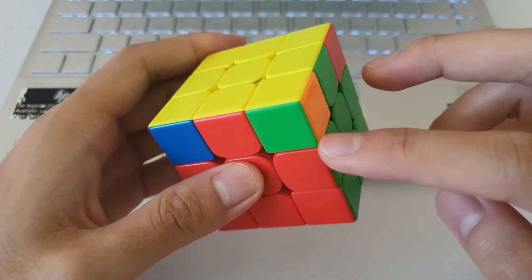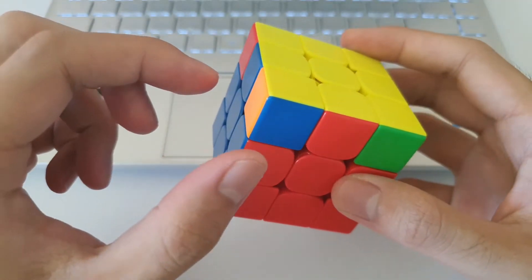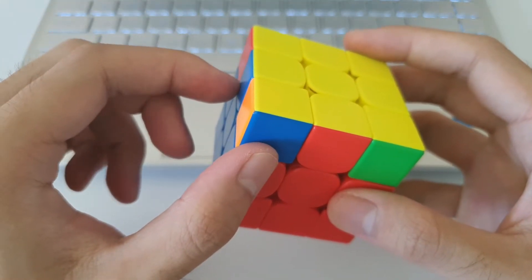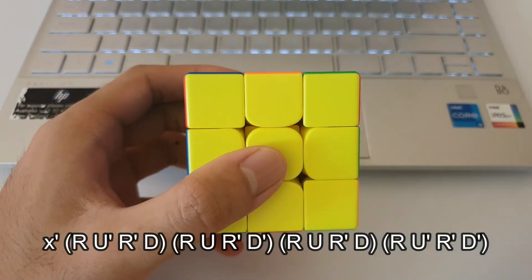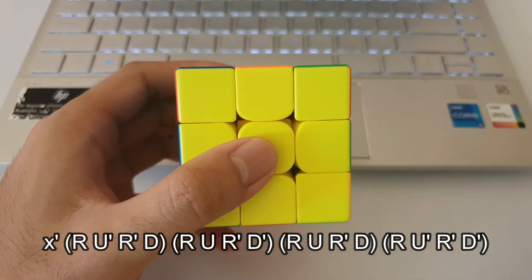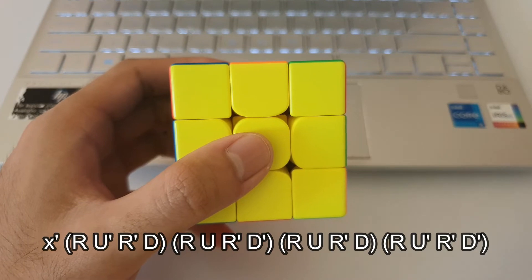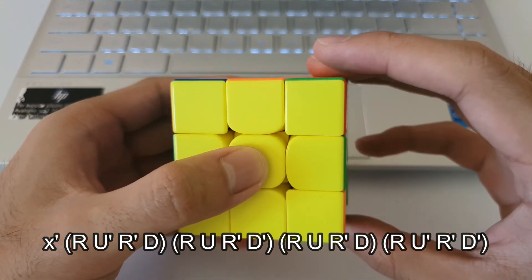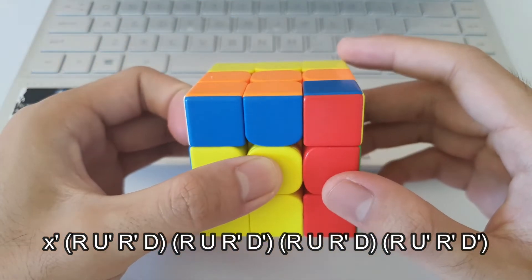Alright, so once again making sure that these colours are matching, that's the correct angle to do the E-perm. As I said, the first half of the algorithm, the U and D moves are always going in the same direction. So what I mean by that is when you're doing R, U and R, D,